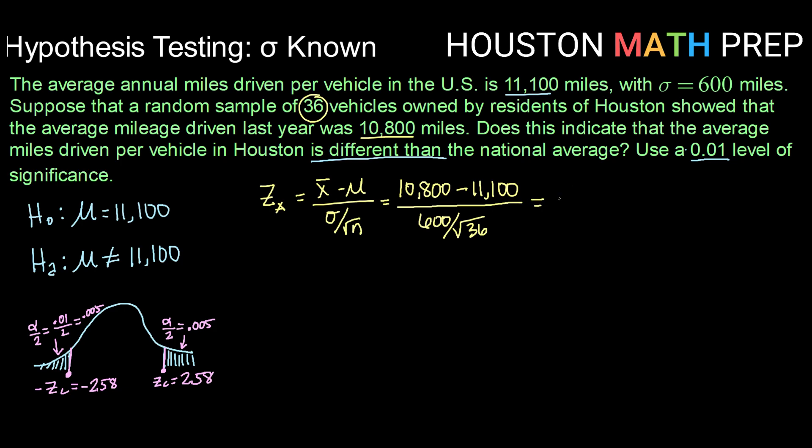So calculating that we get a Z score of negative 3. So checking where negative 3 falls, that falls below negative 2.58, so it does fall in the lower part of our rejection region. So we will go ahead and reject our null hypothesis.